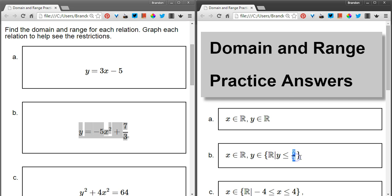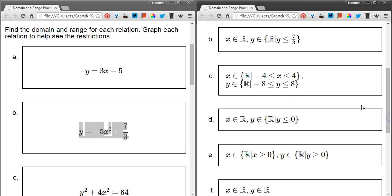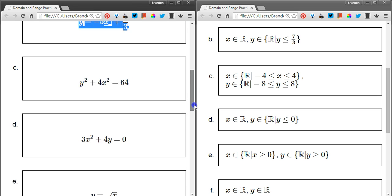I write that in the answers here. y is an element of, we use curly brackets or braces, y is an element of the reals such that, that's that bar there, such that y is less than or equal to 7 thirds. So that is how we restrict, this is a restriction, how we restrict the range to be a part of the real numbers, but not all of the real numbers. For example, not 6.